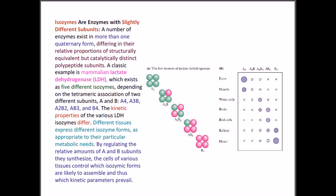Lactate dehydrogenase shows five different forms based on two types of subunits: A and B. Arranging four A subunits makes a homo-tetramer (A4), found in the liver. The homo-tetramer made up of only B subunits (B4) is found in the heart, and both function in their own manner.